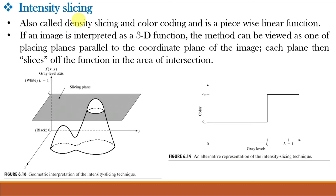First is intensity slicing. The technique of intensity slicing and color coding is one of the simplest methods of pseudocolor image processing. If the image is interpreted as a 3D function, the method can be viewed as one of placing planes parallel to the coordinate plane of the image. Each plane then slices off the function in the area of intersection. Any pixel whose gray level is above the plane will be coded with one color and any pixel below the plane will be coded with the other color.